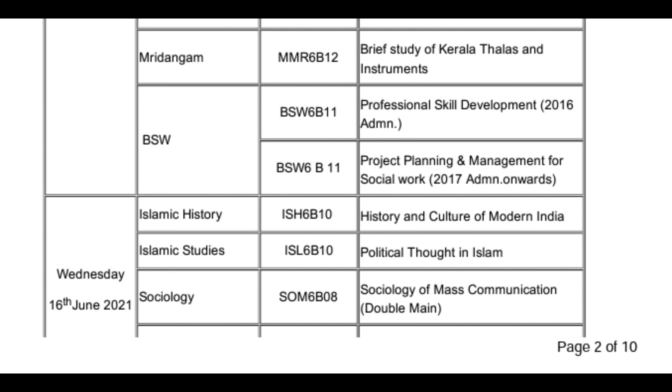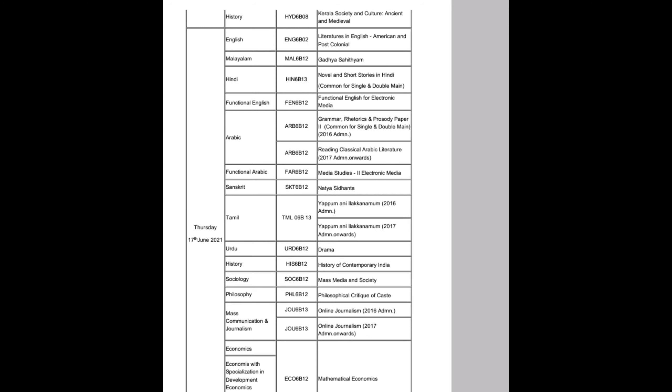In June 16th: Islamic History, History and Culture of Modern India, Islamic Studies, Political Thought in Islam, Sociology, Mass Communication. History: Kerala Society and Culture, Ancient and Medieval. English: Literatures in English, American and Post-Colonial. Malayalam. Informal English for traditional English Universities. In Arabic.